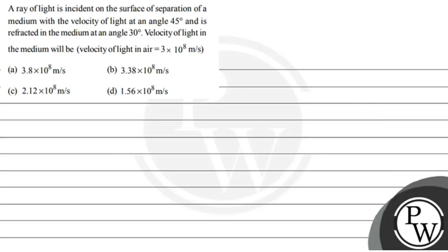Hello, let's read the question. The question is: a ray of light is incident on the surface of separation of a medium with the velocity of light at an angle 45 degrees and is refracted in the medium at an angle 30 degrees.